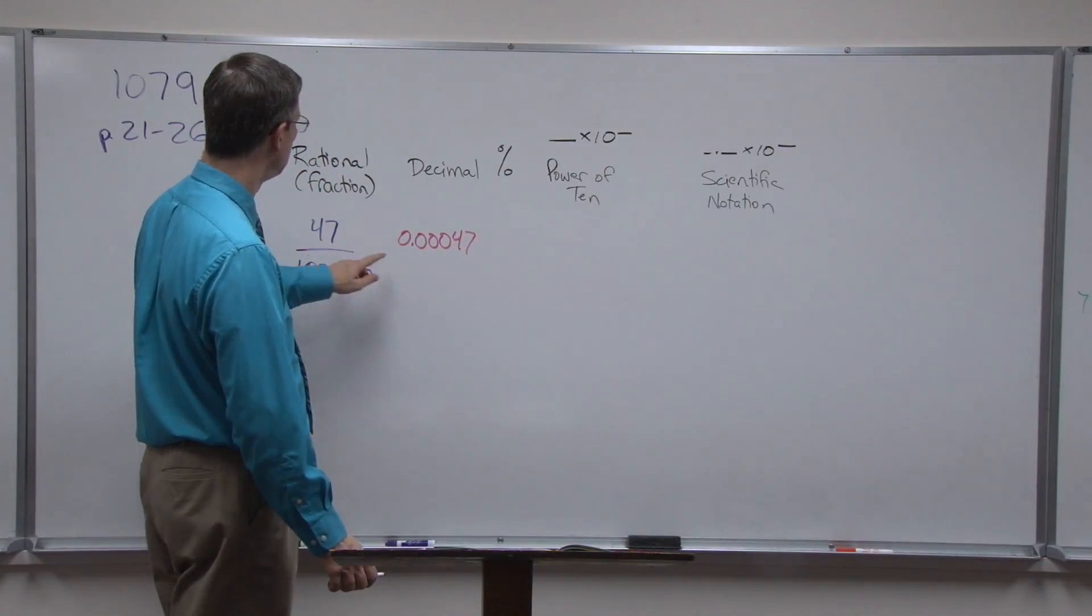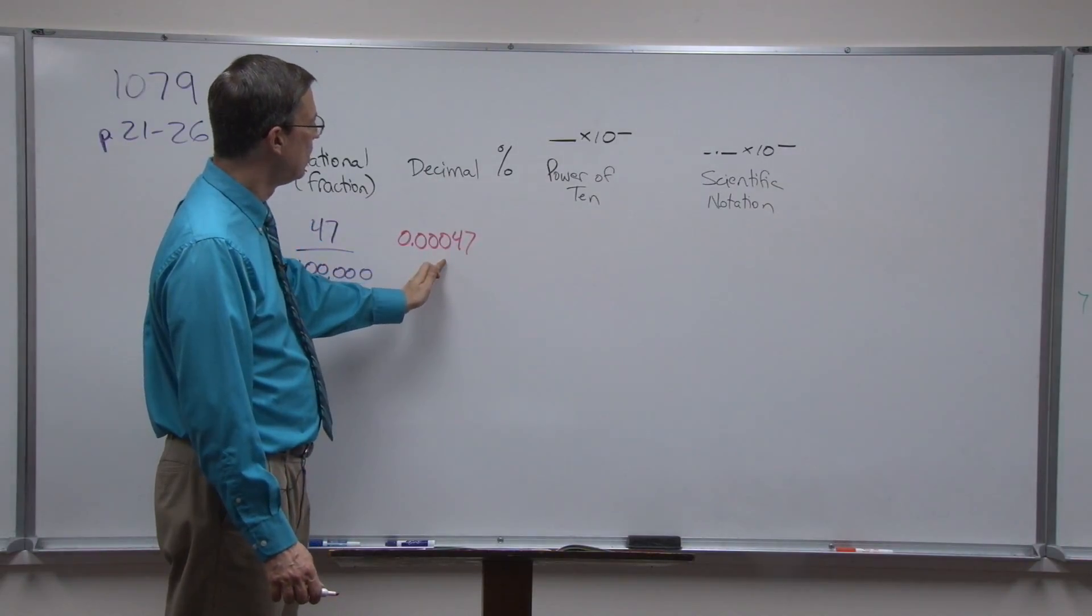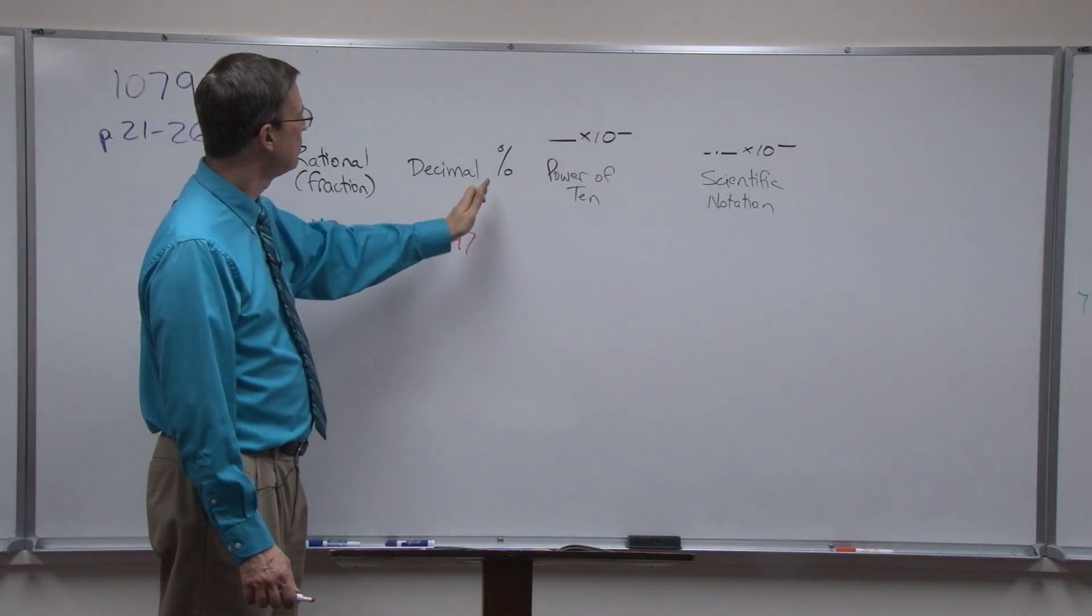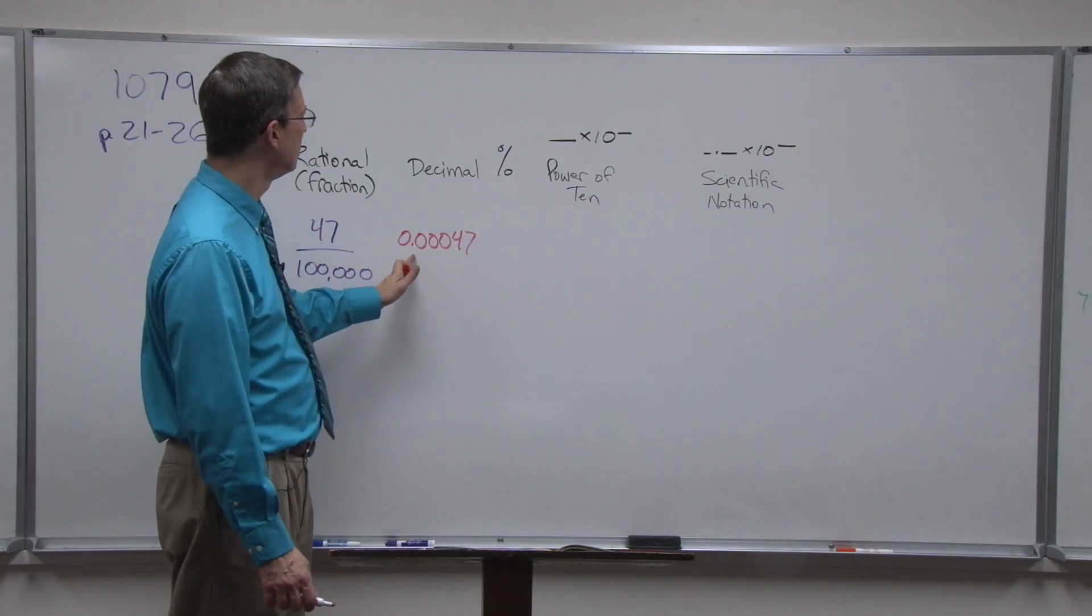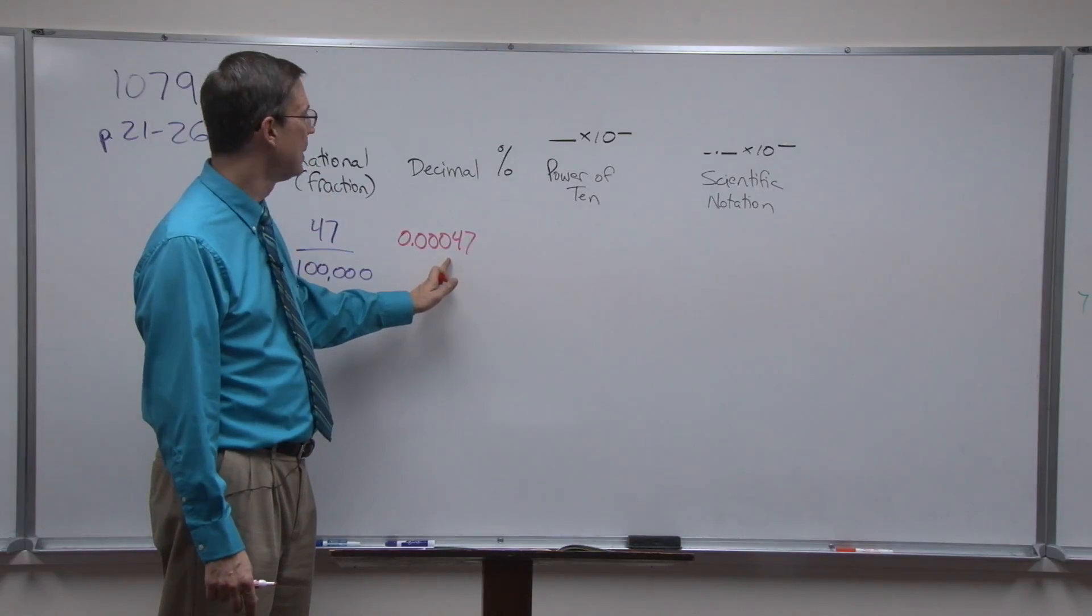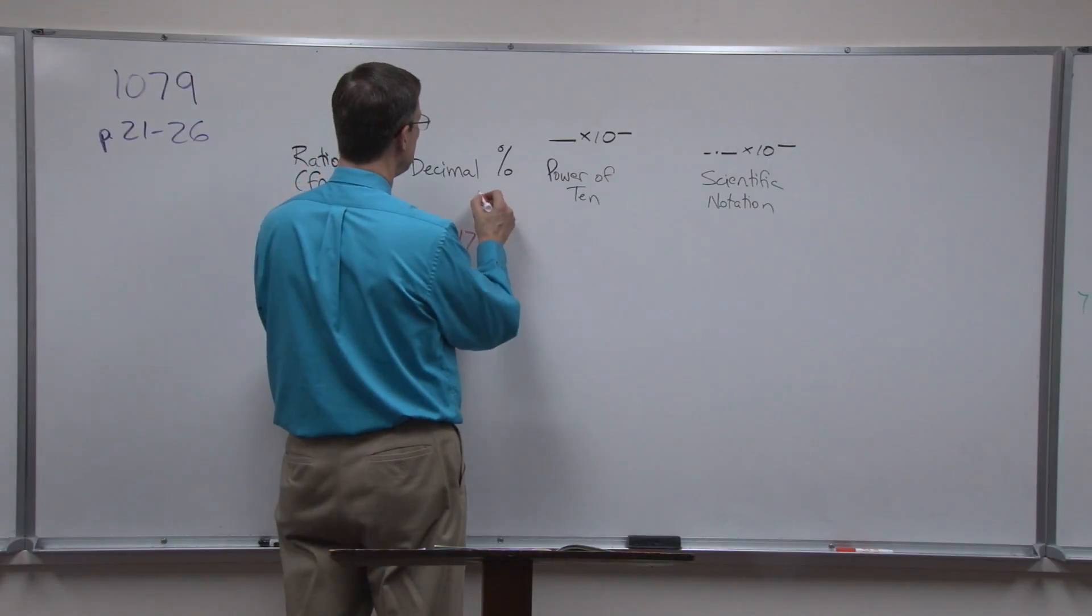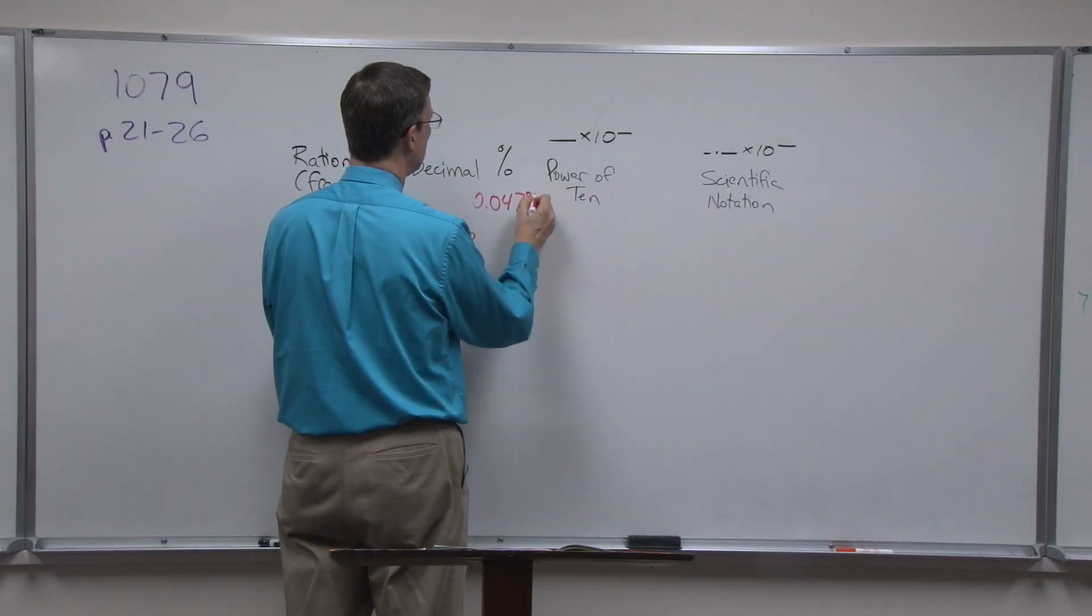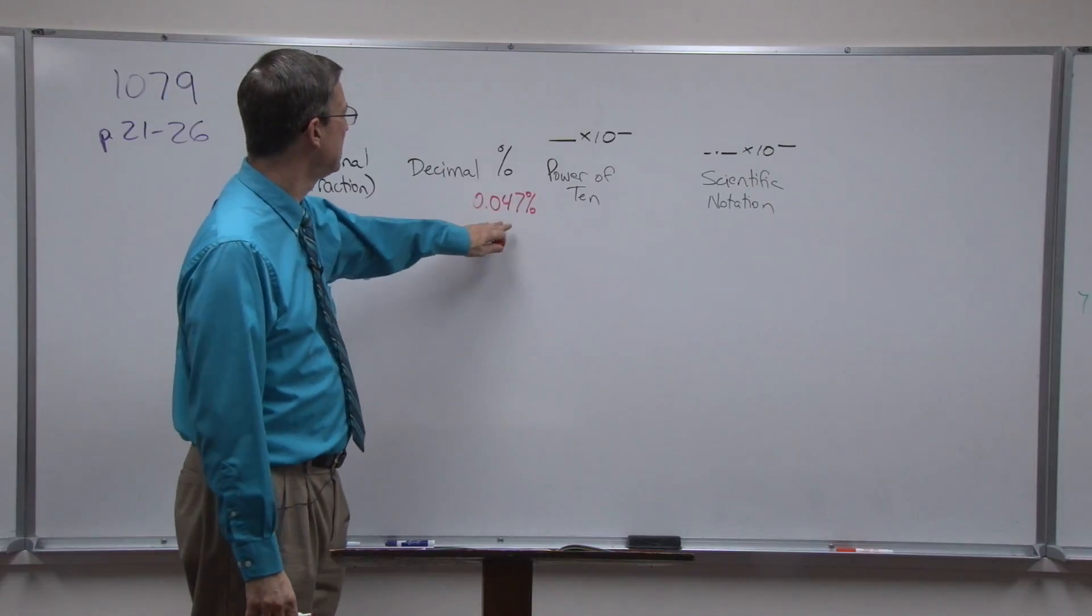So 0.00047 would be the decimal number, one, two, three, four, five. What would this be as a percent? As a percent, remember in that chart that we had in the previous video, we always move the decimal twice to the right, always twice, never more, never less, always twice. And then you have a percent. So cha-ching, cha-ching, we would have 0.047 percent. Now that may sound like a very small percent, and it is.